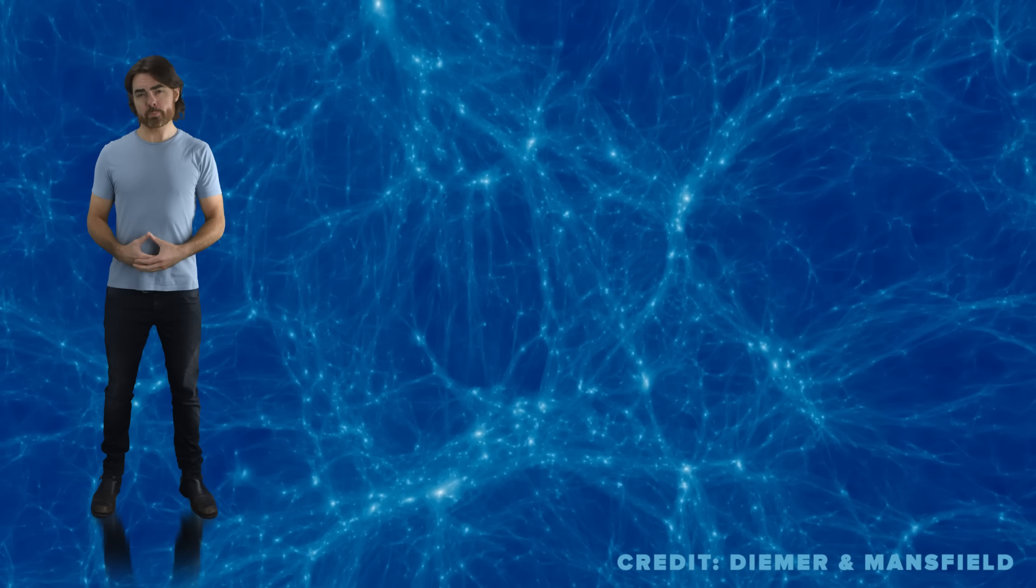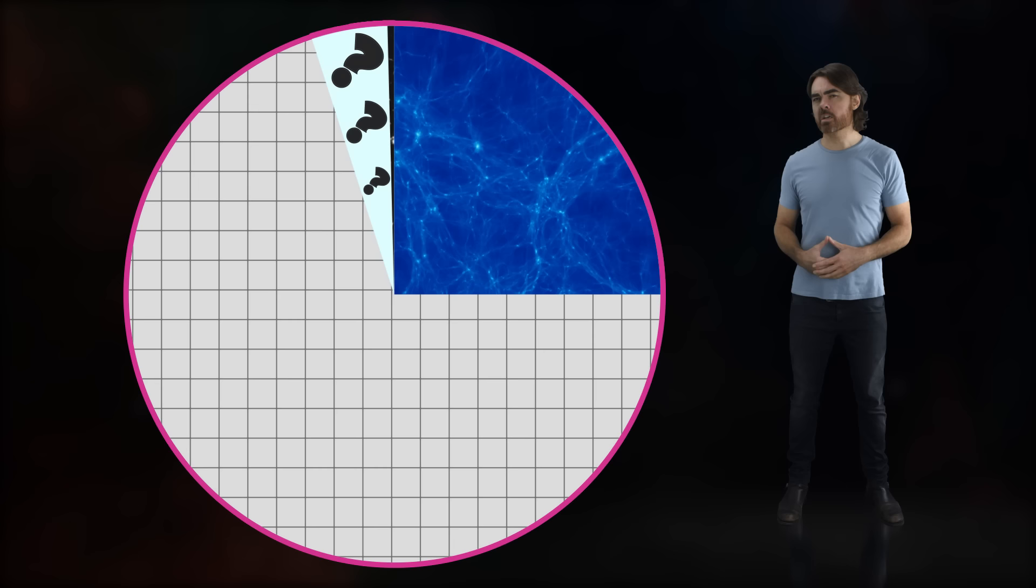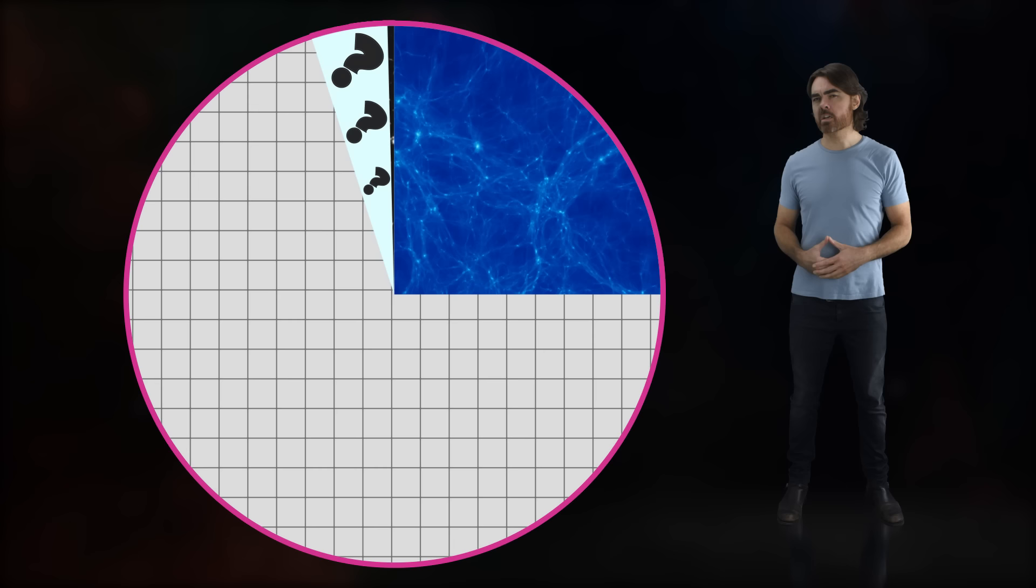First, a quick refresher on dark matter and dark energy. There's plenty more detail in some previous episodes. Dark matter is believed to be an invisible stuff that interacts only through gravity. It comprises 80% of the mass of the universe or around 25% of its total energy content.